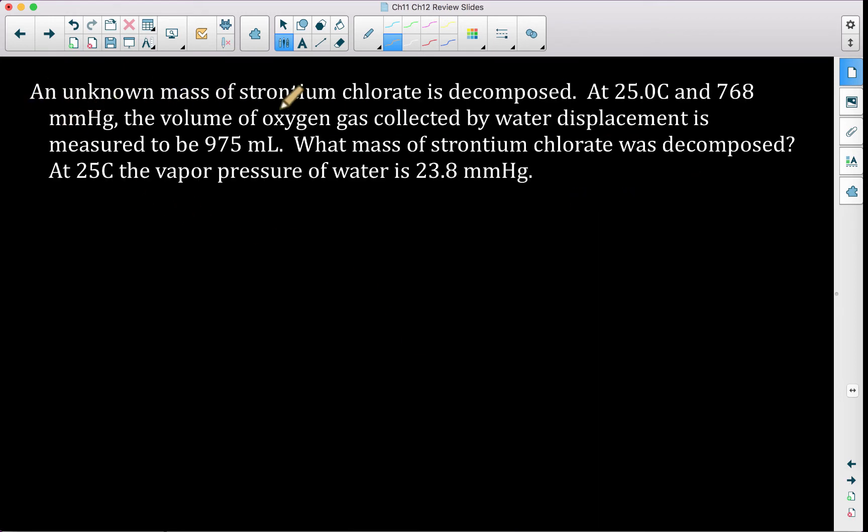So it says an unknown mass of strontium chlorate is decomposed. What key things did we just read? Chemical reaction, chemical reaction. That means, let's go ahead and write a reaction. Strontium chlorate is decomposed. Chlorate's decomposed to form chlorides and oxygen. So we have an equation.